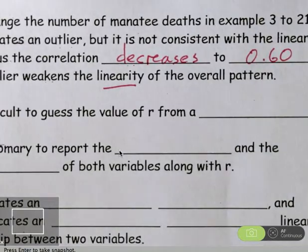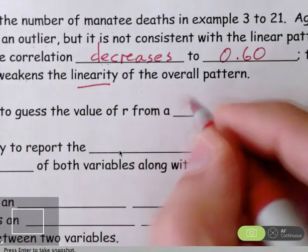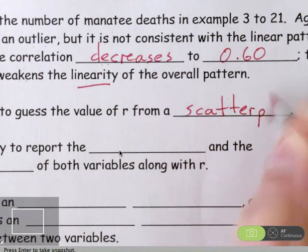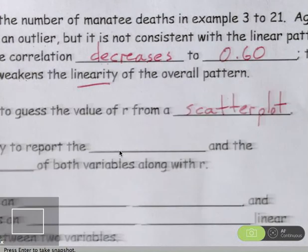So, some other comments about correlation in general. It is difficult to guess the value of a correlation from a scatterplot. It's very difficult just to look at a scatterplot and say, Oh, that correlation is 0.7 or that correlation is negative 0.3. The truth is, if we're going to talk about a specific correlation, we're going to have to calculate it from the data or it's going to have to be given to us. Guessing it from a scatterplot is just not something that's feasible.